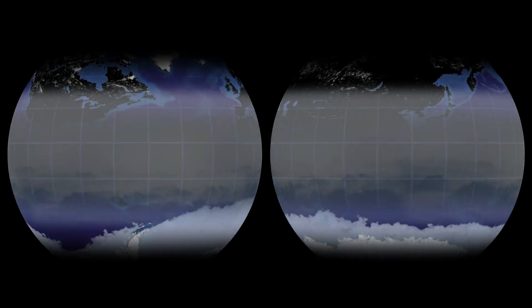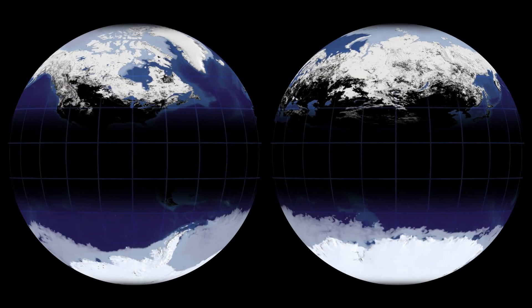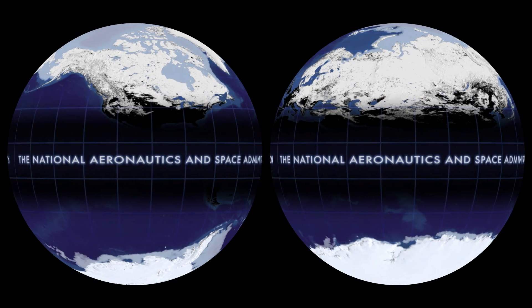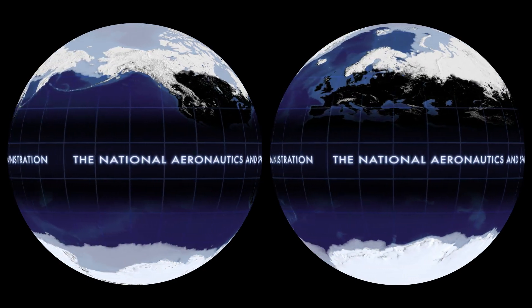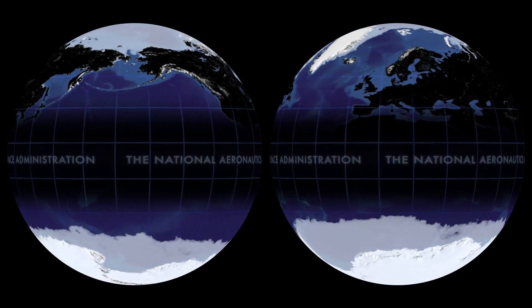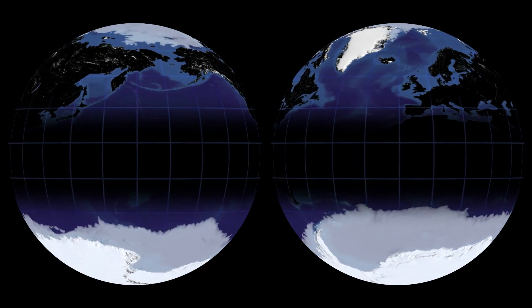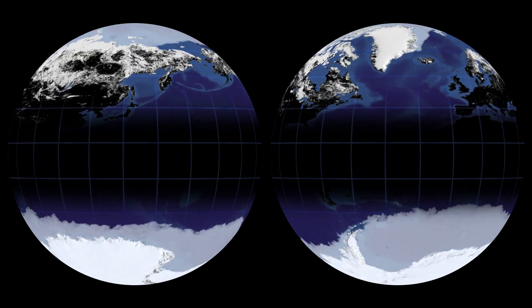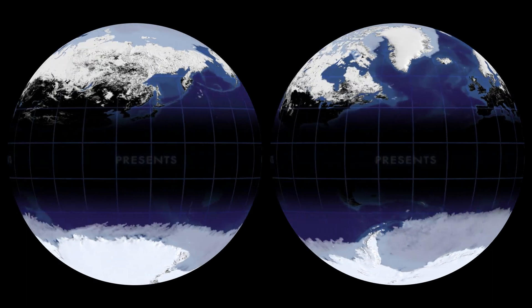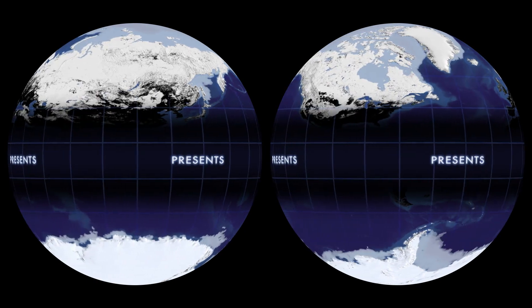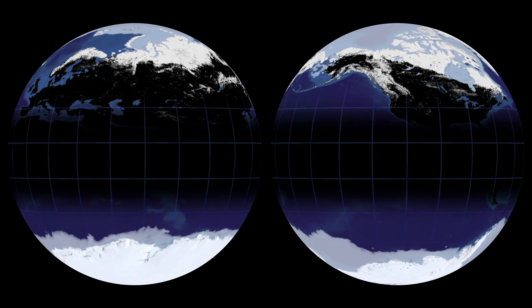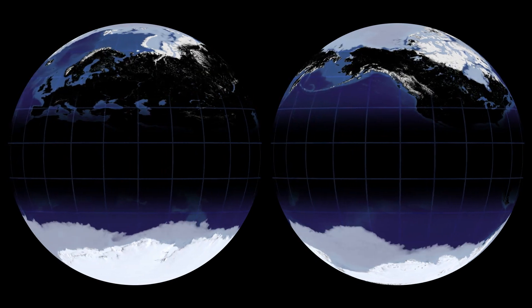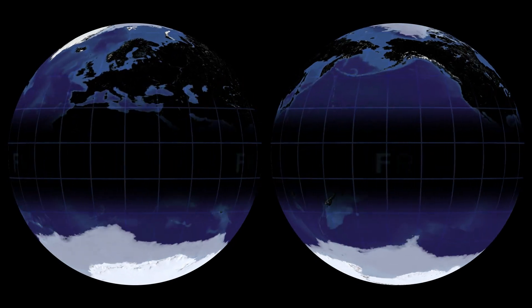At the poles, it's cold all the time. Polar temperatures influence more parts of the Earth than you might think. These cold regions control the thermostat for the rest of the Earth.